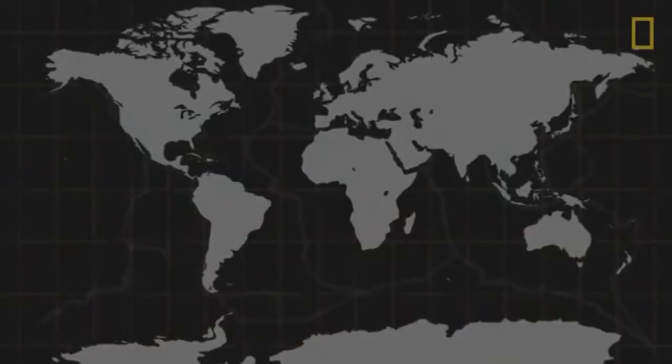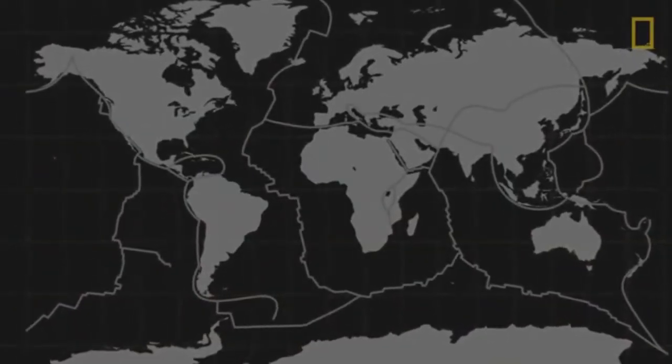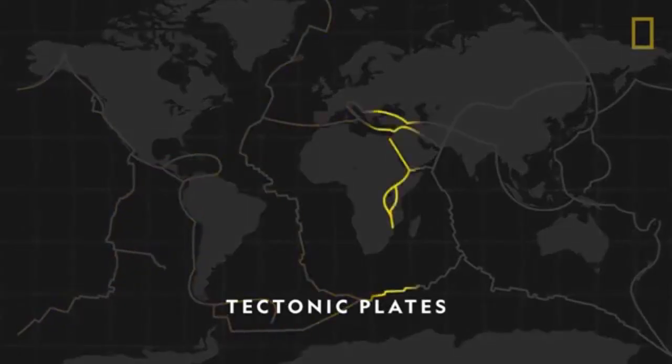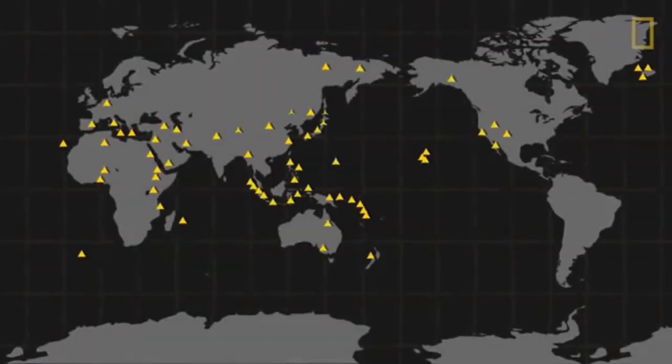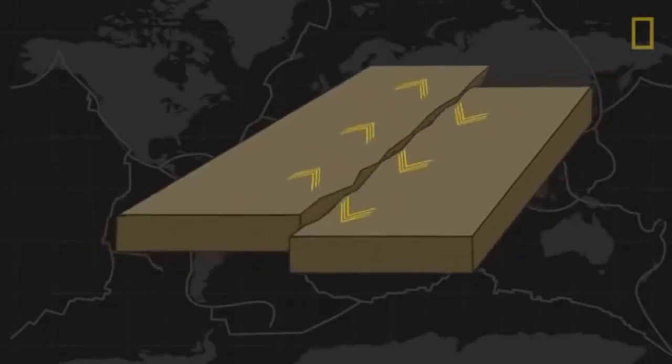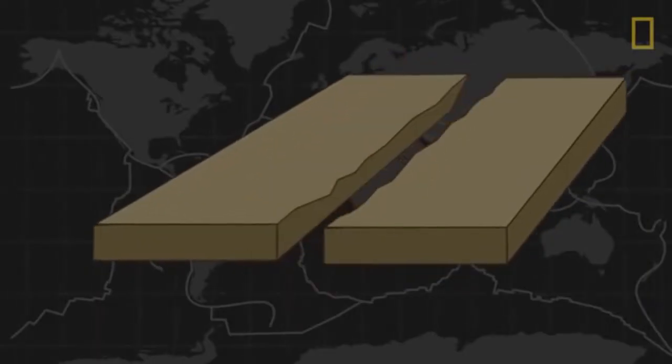Let us recall our previous lesson. We learned that some, but not all, volcanoes are related to earthquakes. Most earthquakes are along the edges of tectonic plates, which is where most volcanoes are too. However, most earthquakes are caused by the interaction of plates, not the movement of magma. Most earthquakes directly beneath a volcano are caused by the movement of magma, which causes harmonic tremor, and these earthquakes are not usually felt.